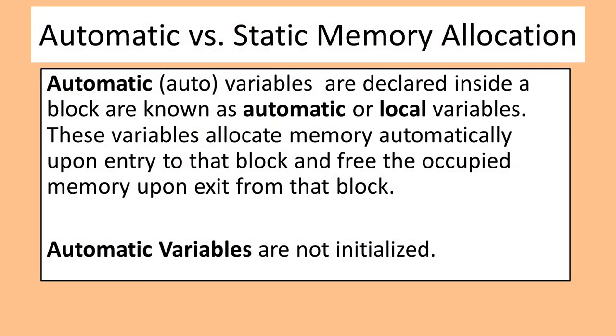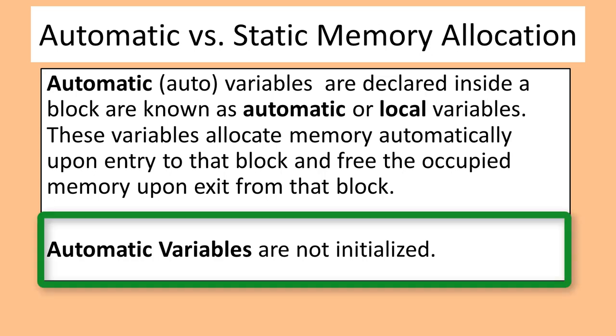Automatic variables are given a space on the stack in memory when a block of code is entered. Automatic variables in C and C++ do not have their memory contents initialized — they are left with whatever happens to be in those memory cells the last time they were used. For this reason, local variables must be initialized before being used or you will be working with garbage data.